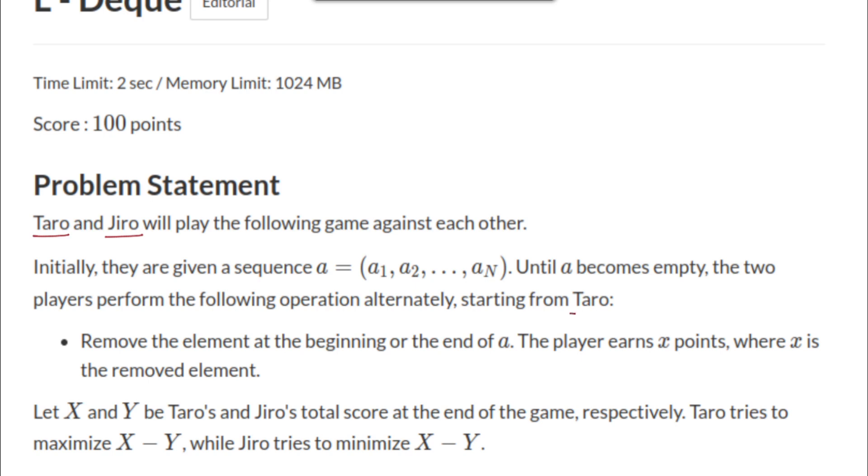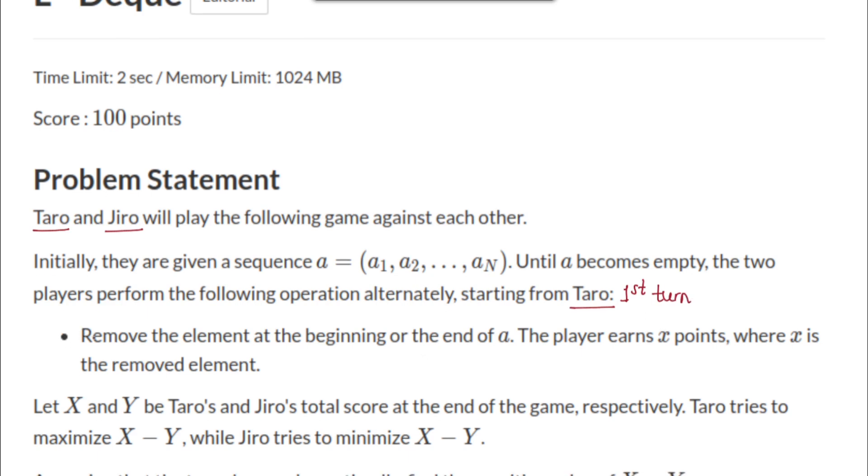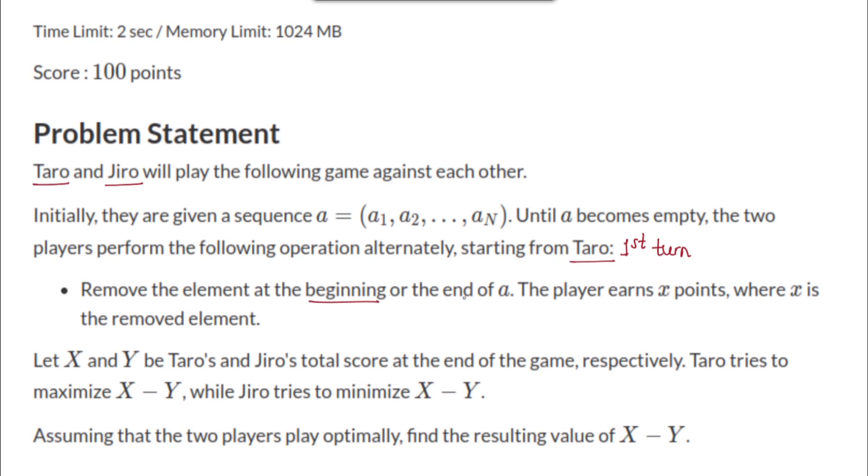So Taro is the player with the first turn. The operation states that you need to remove the element at the beginning or the end of the array. After each move, the corresponding player earns x points where x is the removed element. Let X and Y be the respective total scores of Taro and Jiro at the end of the game. Taro is trying to maximize X minus Y, whereas Jiro is trying to minimize this term X minus Y.